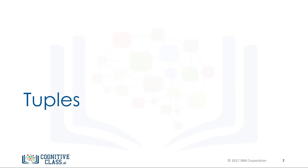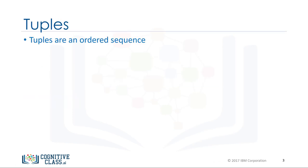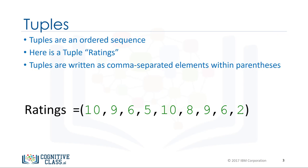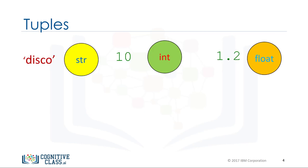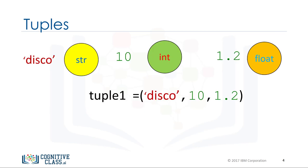Tuples are an ordered sequence. Here is the tuple ratings. Tuples are expressed as comma separated elements within parentheses. In Python there are different types — strings, integer, float — and they can all be contained in a tuple, but the type of the variable is tuple.